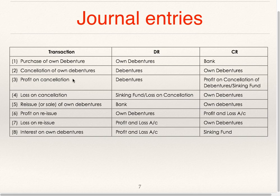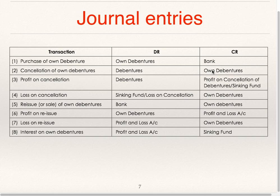Now we will see journal entries. When the company purchases own debentures, the entry is: own debentures account debit, to bank account. Cancellation of own debentures: debentures account debit, to own debentures. Profit on cancellation: debentures account debit, to profit on cancellation of debentures or to sinking fund. If a debenture with face value 100 is purchased at 90, the entry is: own debentures account debit to bank 90. When cancelling, the entry is: debentures account debit 100 to own debentures 90. The profit of 10 rupees will be transferred to sinking fund or profit on cancellation of debentures.